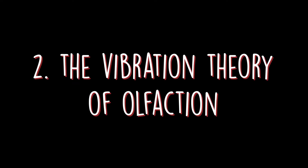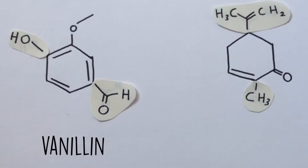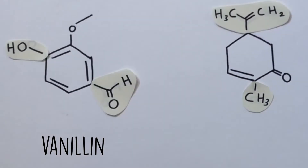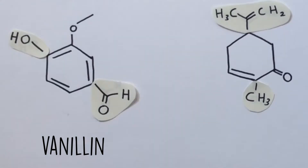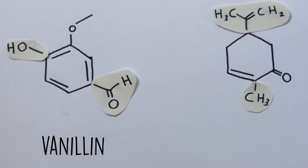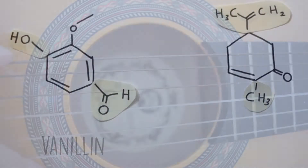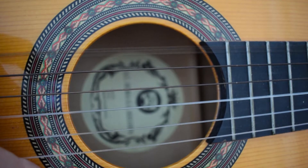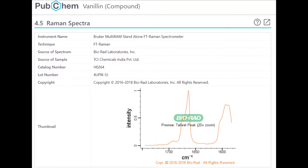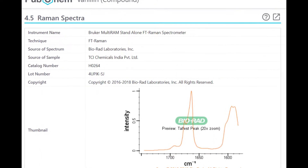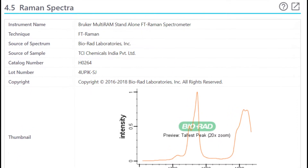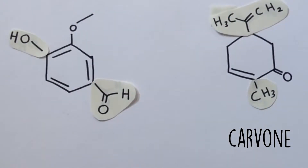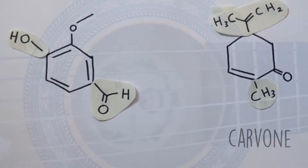The other theory, called the vibration theory of olfaction, or the swipe card model, in its most modern form states that different types of smells are due to the resonant vibrational frequency of the molecule. This is the frequency at which it will naturally vibrate when set in motion, and it depends on what and how the odorant is composed.